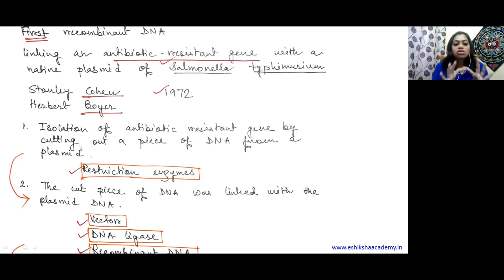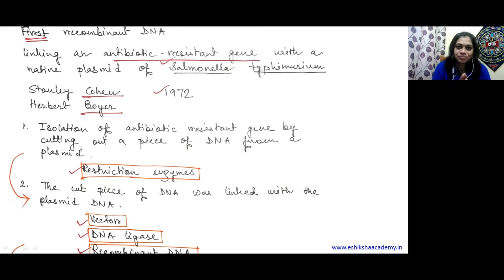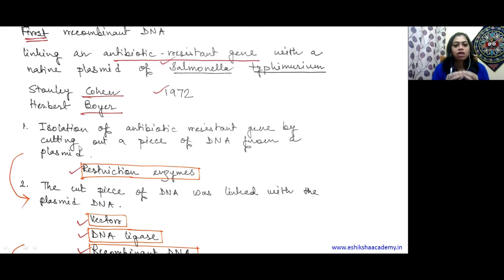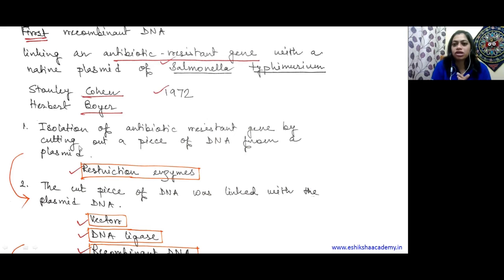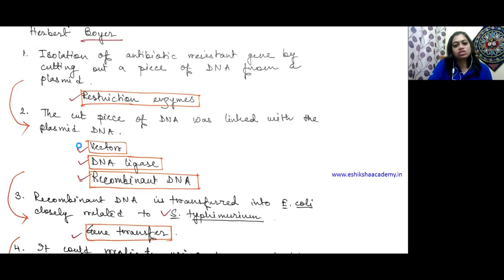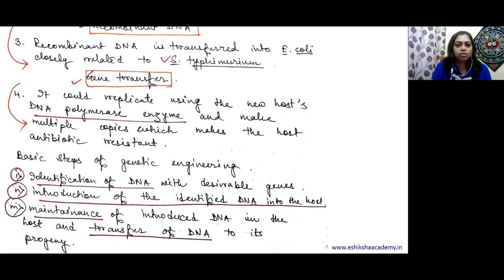So we are joining plasmid DNA - the vector - with our gene of interest, using DNA ligase enzyme. Finally, we get our recombinant DNA. It contains vector DNA plus the antibiotic-resistant gene. This is essentially our recombinant DNA. So Cohen and Boyer did exactly this, forming the first recombinant DNA.